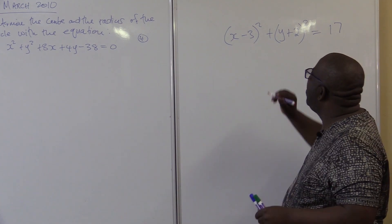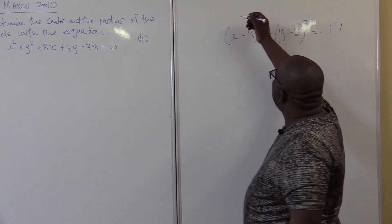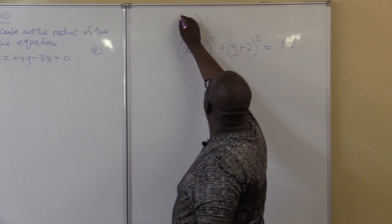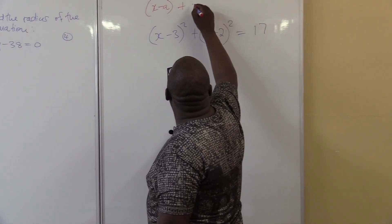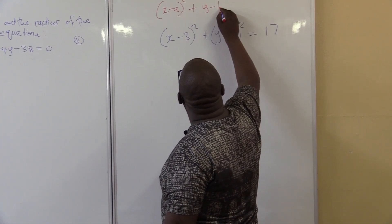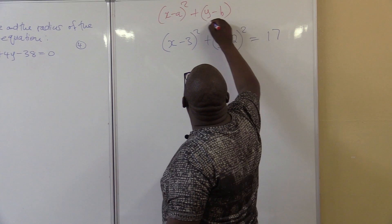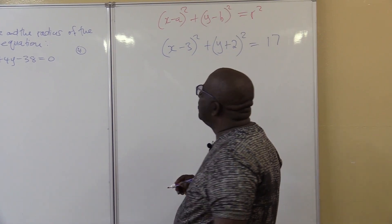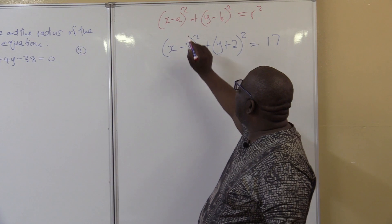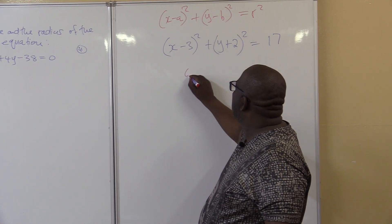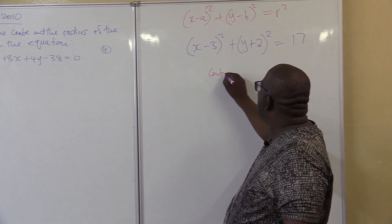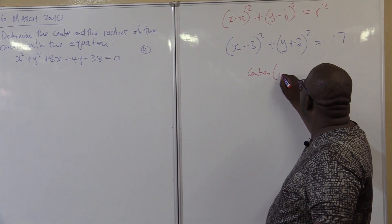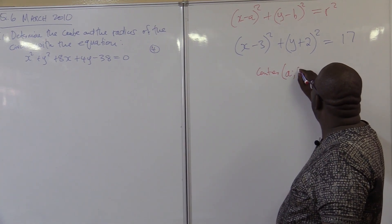In this particular case, we remember that the standard form is always: x minus a, all squared, plus y minus b, all squared, equals r squared. When we are looking for the center, it is this value here — the center will be (a, b). These are the coordinates of the center.